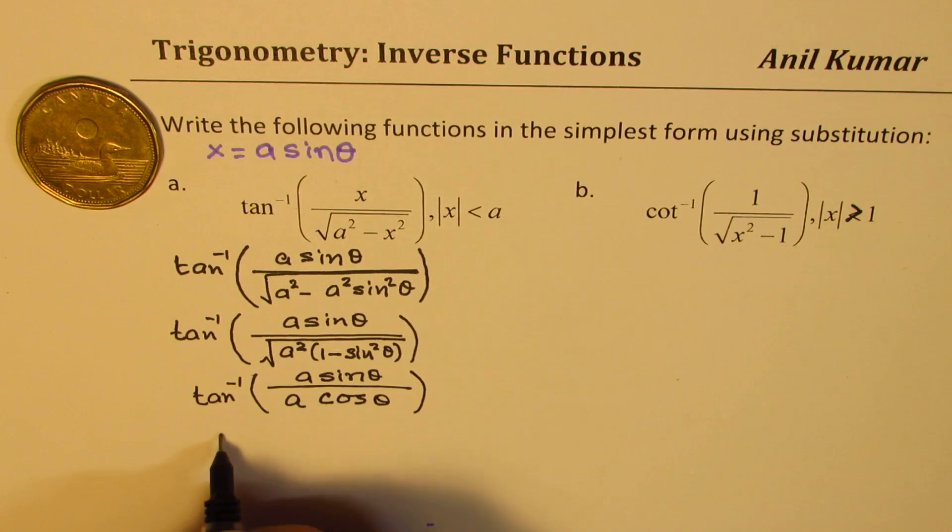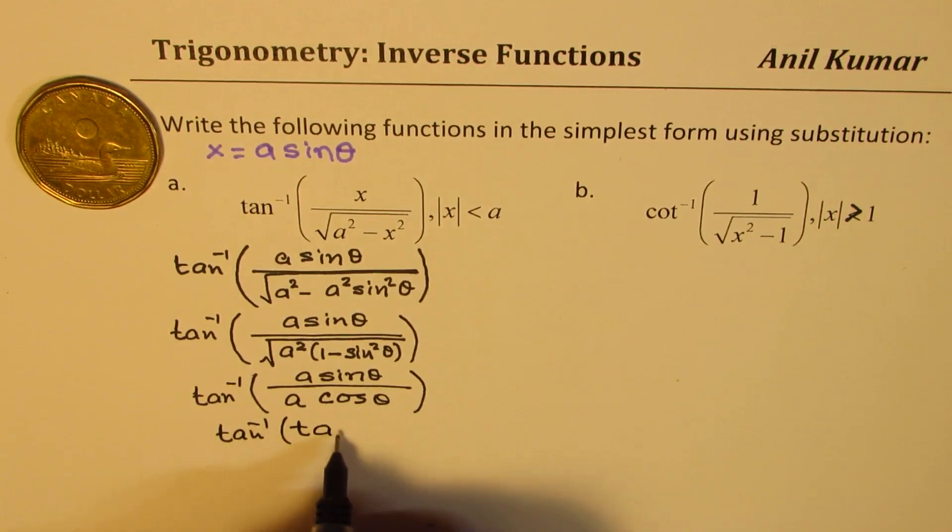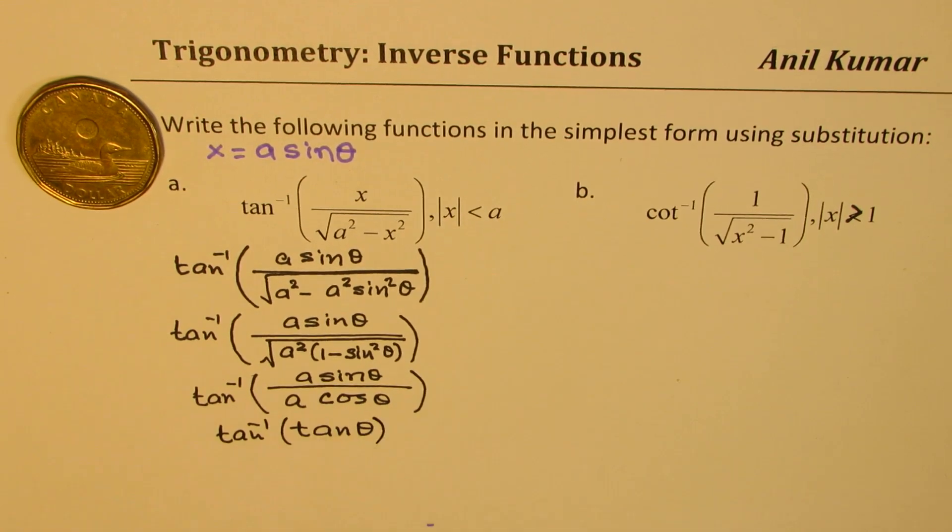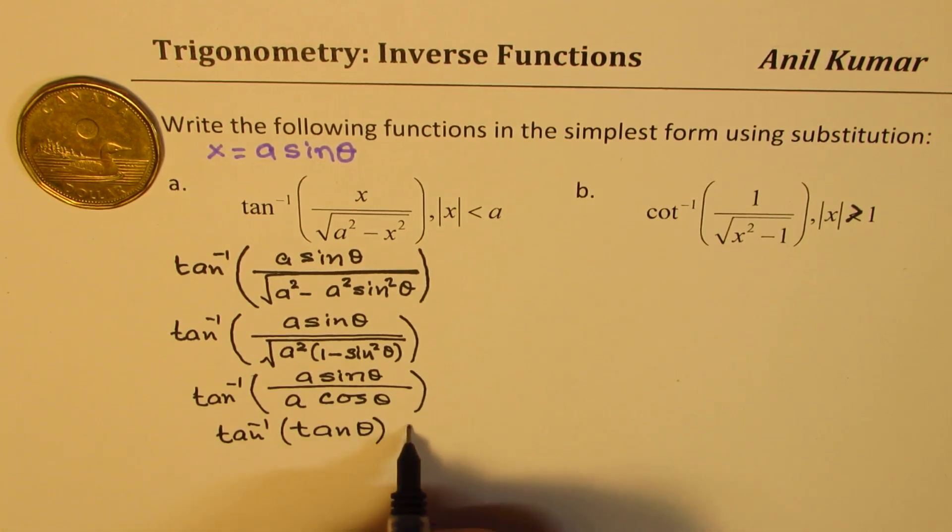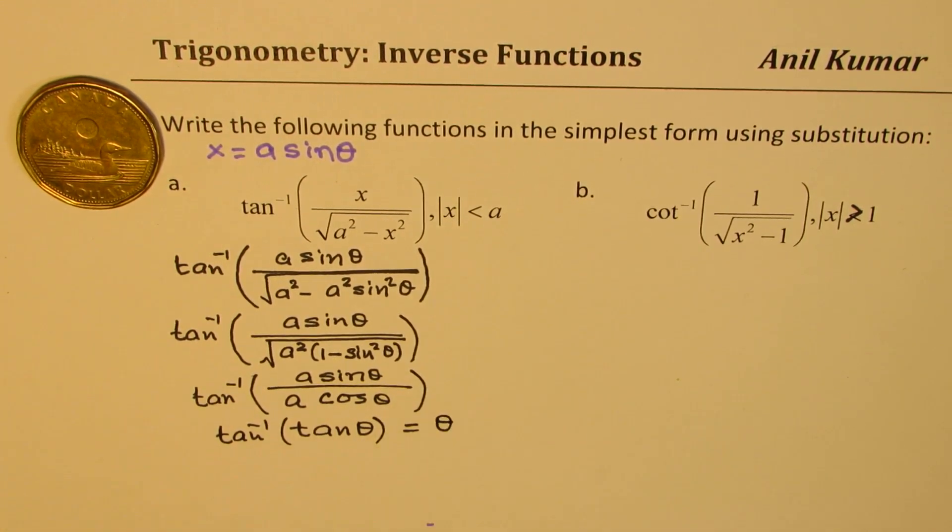Now, a and a cancel, so we get tan inverse of tan theta. So tan inverse of tan theta is going to give me the angle theta itself.